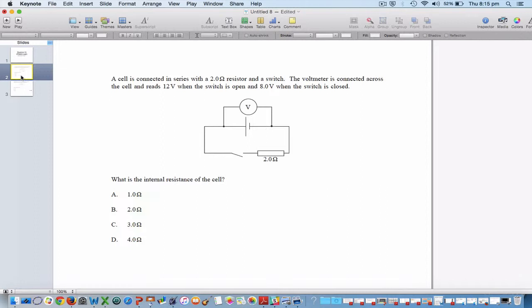A cell is connected in series with a 2 ohm resistor and a switch. The voltmeter is connected across the cell and reads 12 volts when the switch is open, and 8 volts when the switch is closed. Okay, so what is the internal resistance of the cell?